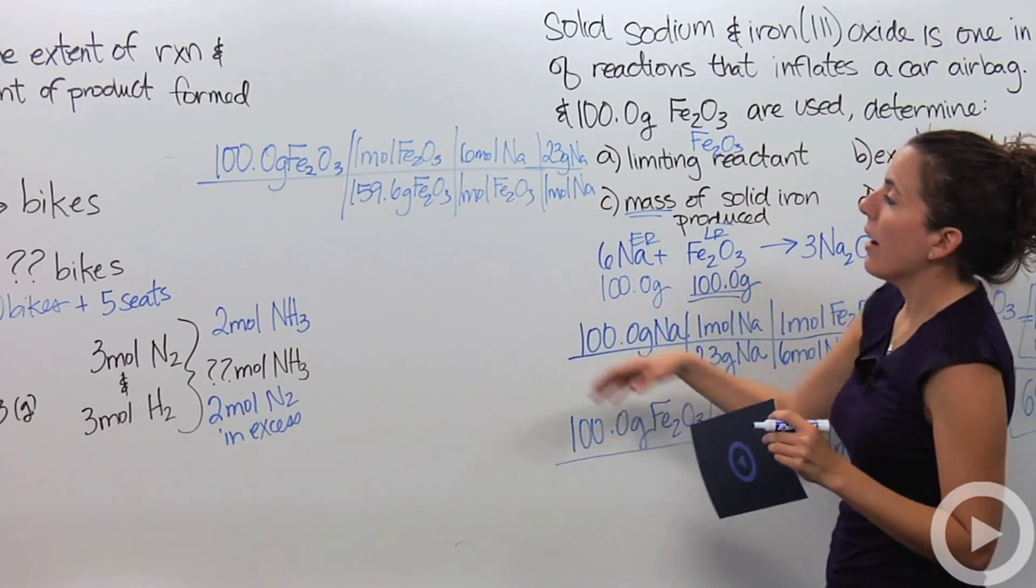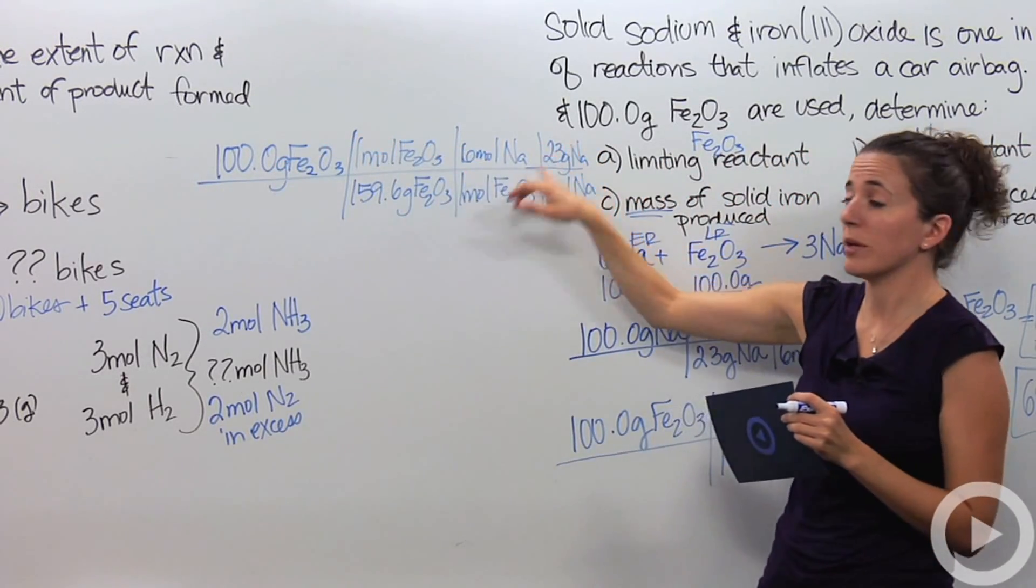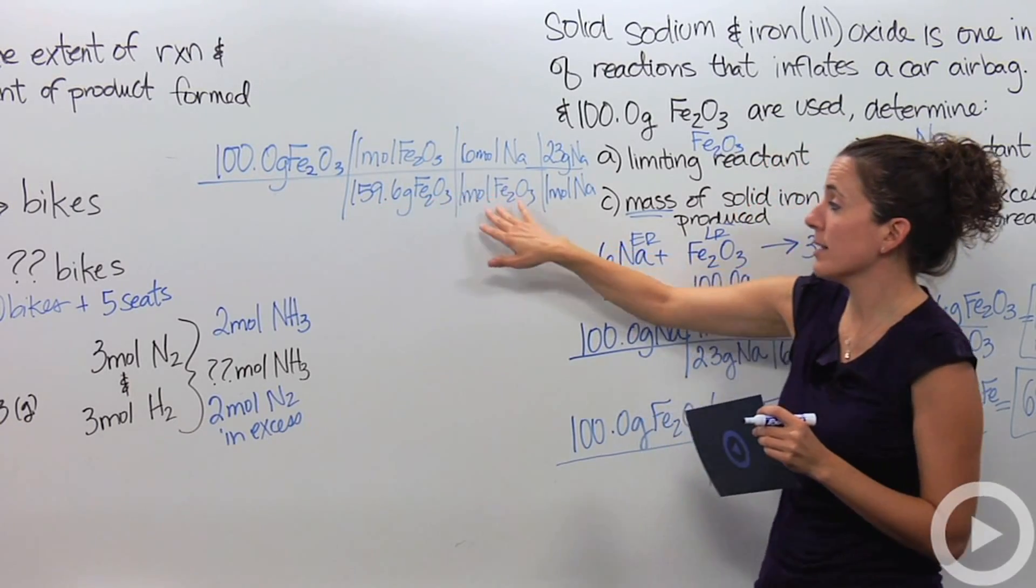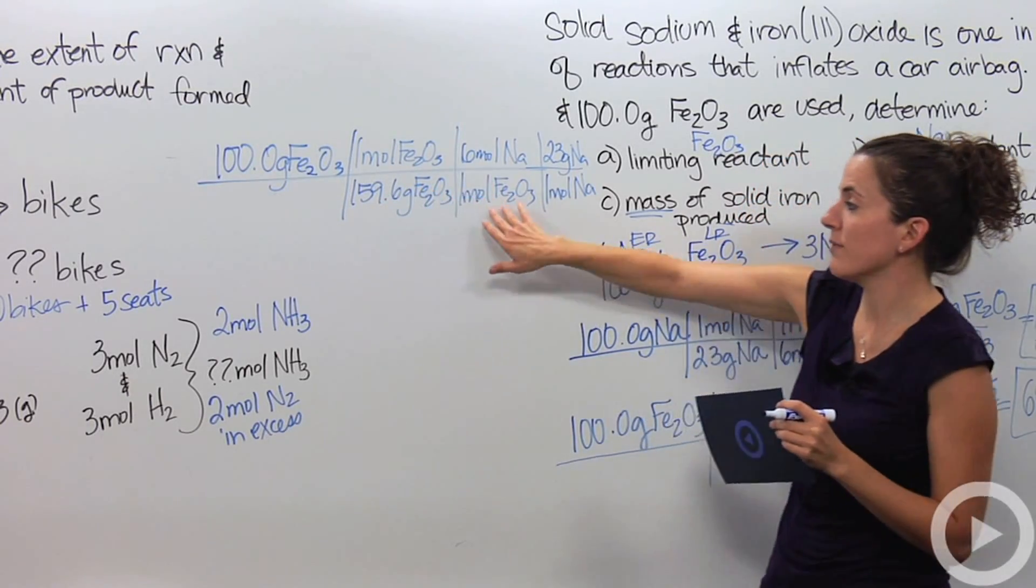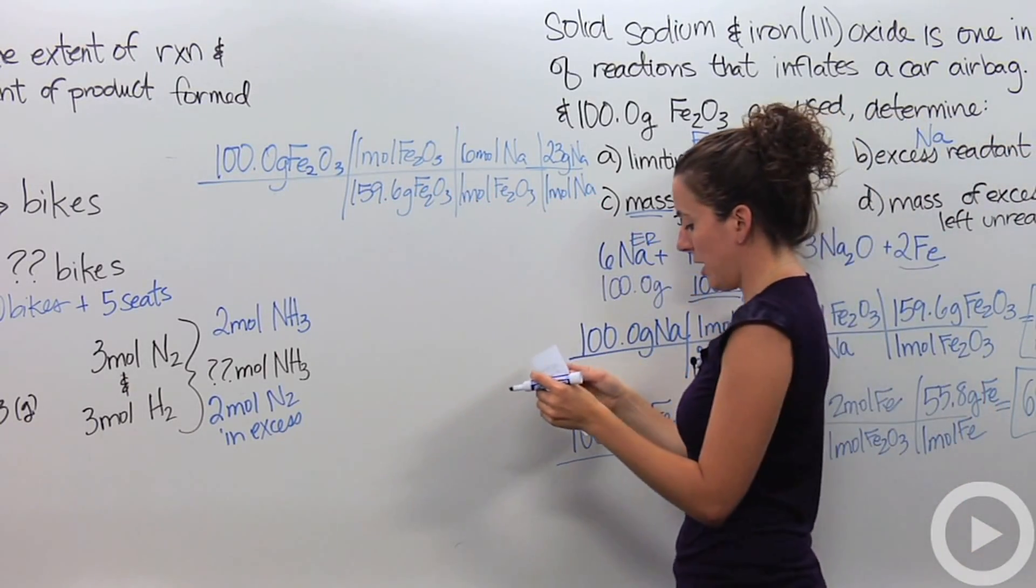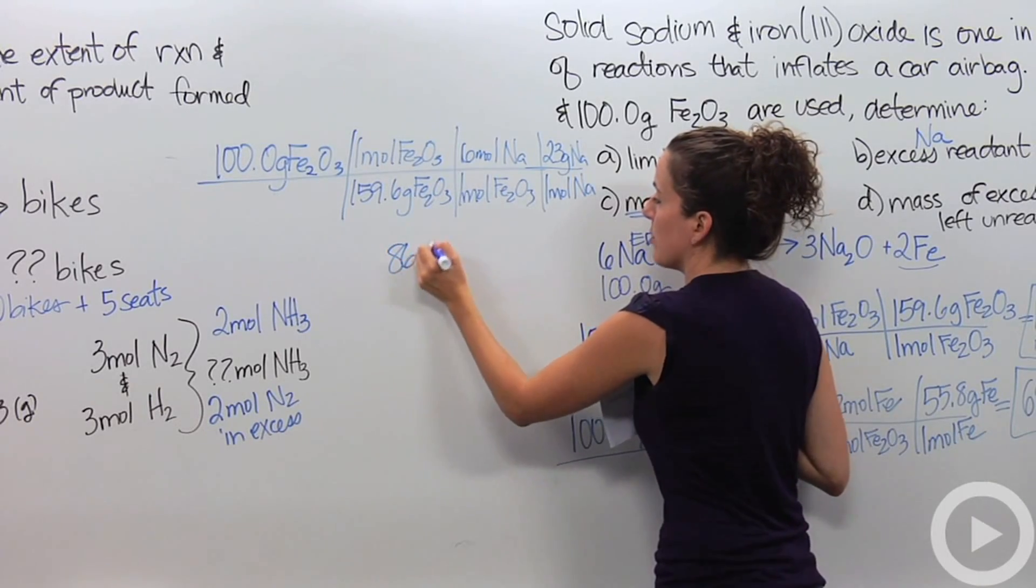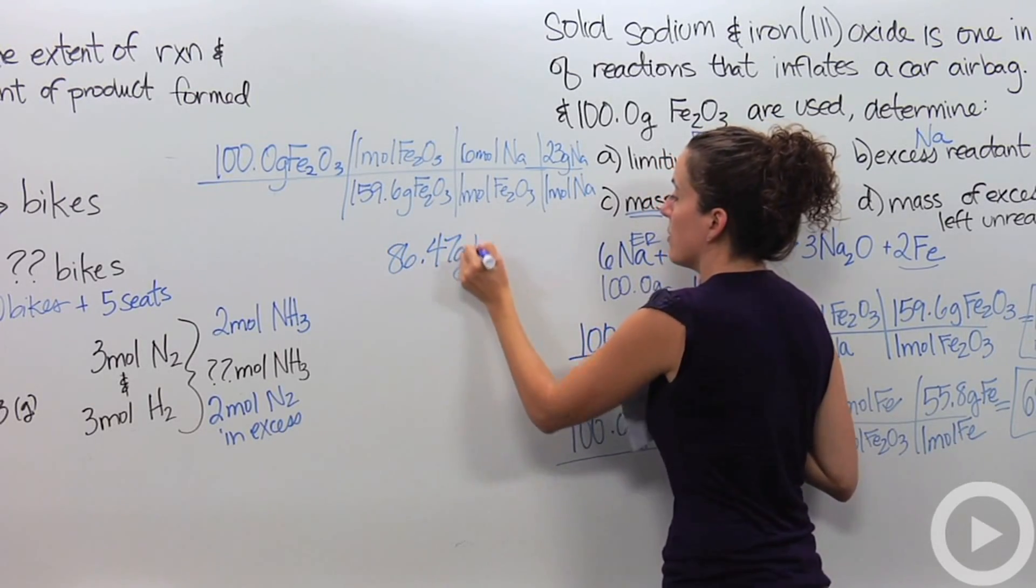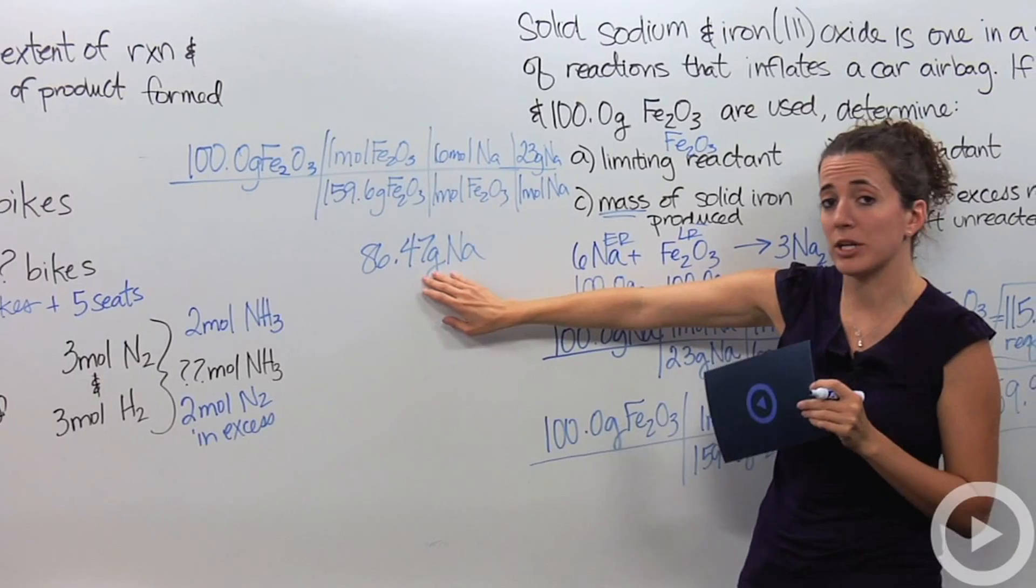All right. So, if I were to do the math of this, 100 times 1 times 6 times 23 divided by 159.6, divided by 1, divided by 1, is actually going to give me 86.47 grams of sodium. That's how much I actually used in my reaction.